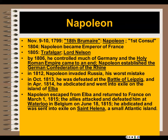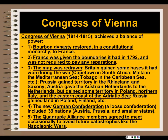In 1812, Napoleon decided to invade Russia, which was really his worst mistake — it was the beginning of the end for Napoleon. He was defeated in 1813 at the Battle of Leipzig. He abdicated and went into exile on the island of Elba. But then he escaped from Elba and returned to France on March 1st of 1815. The Allies attacked and defeated him at Waterloo in Belgium on June 18th, 1815. He again abdicated and was sent into exile on St. Helena, a small Atlantic island, where he would die. His significance was that he and his troops moved into Germany and erased the Holy Roman Empire in 1806, establishing instead the German Confederation of the Rhine.